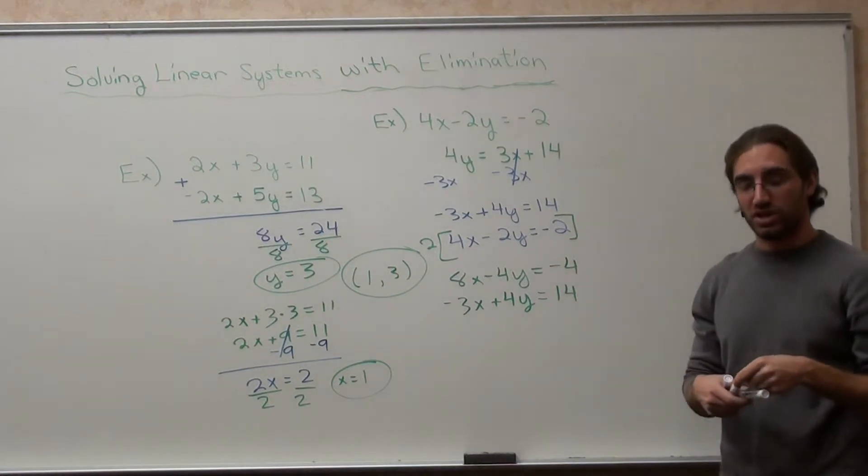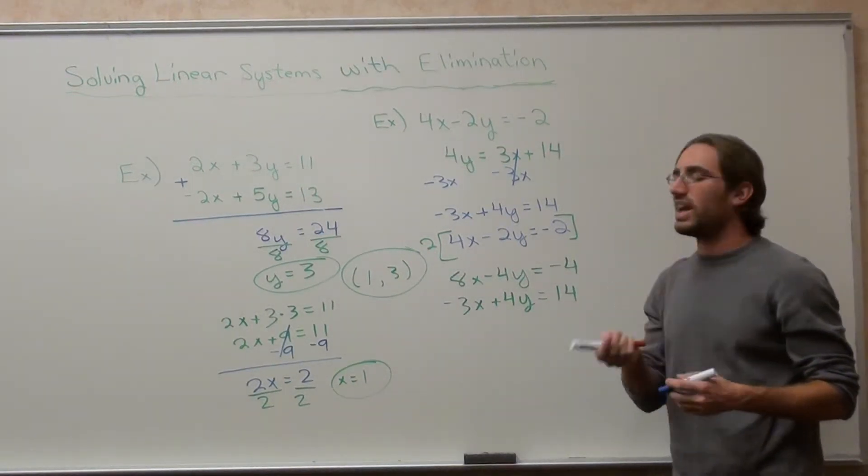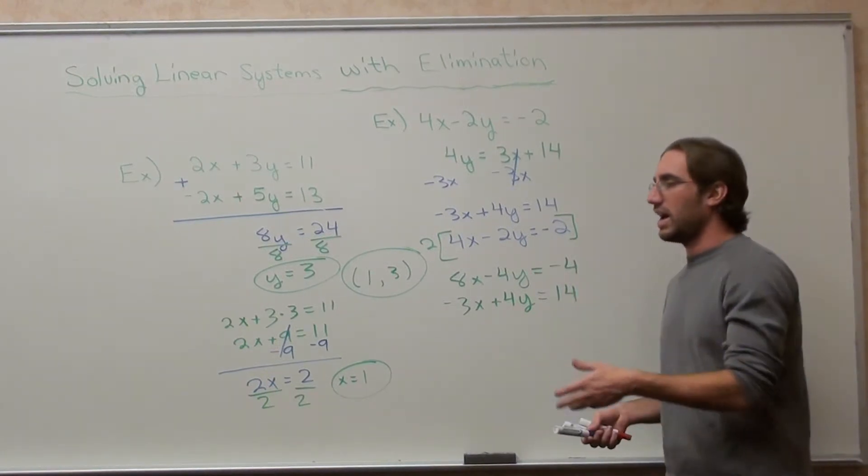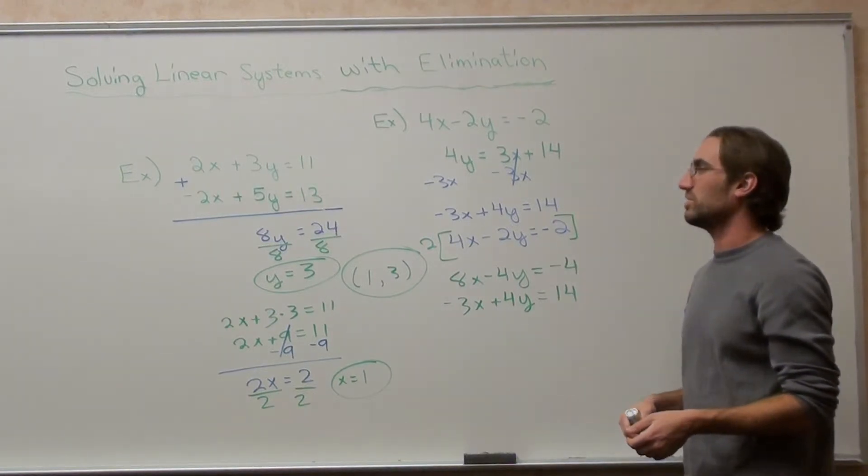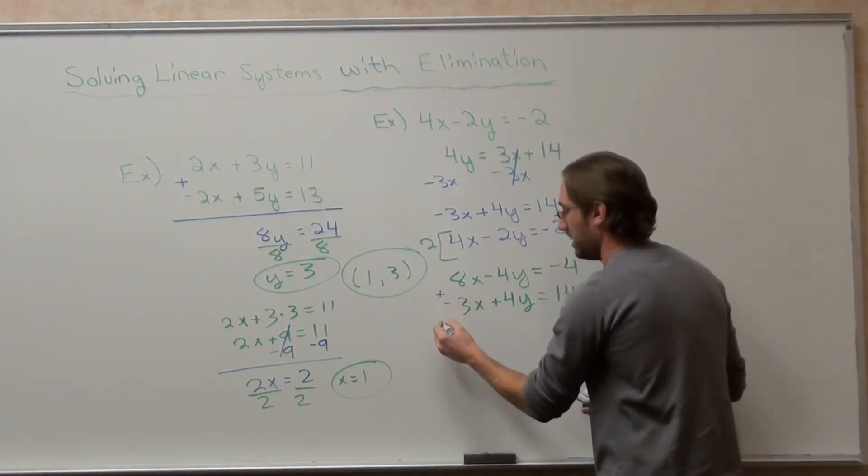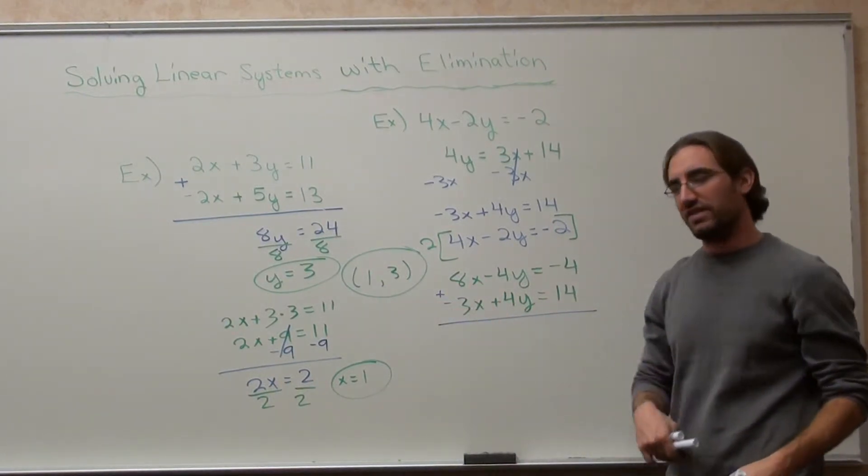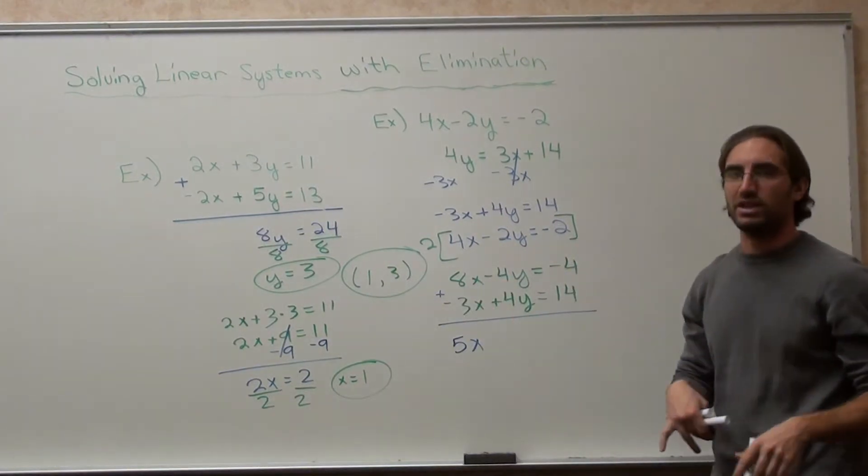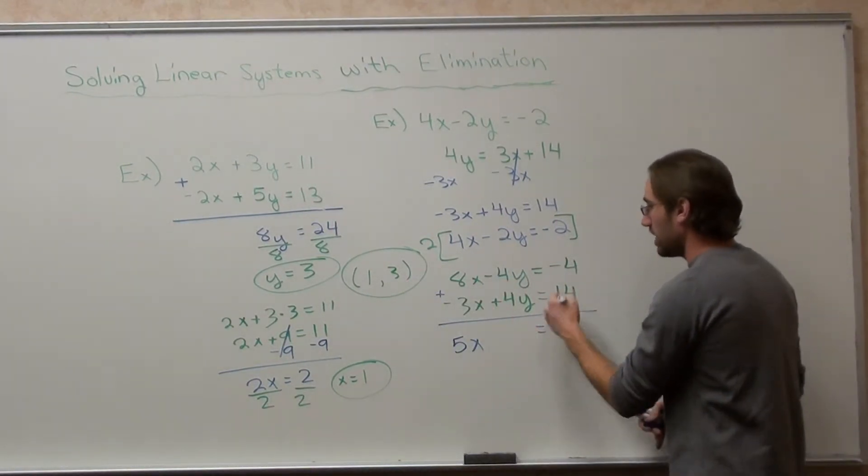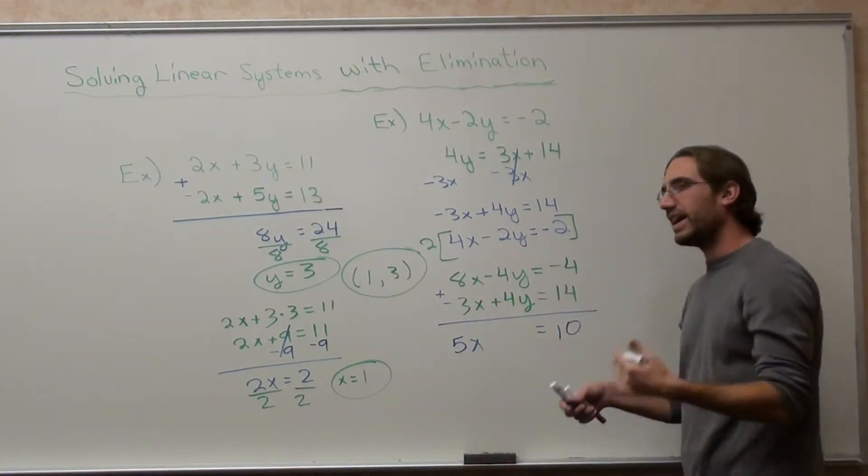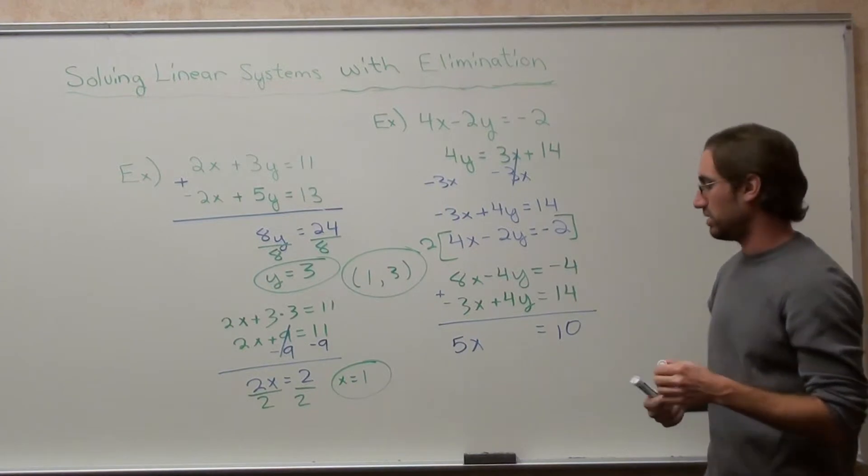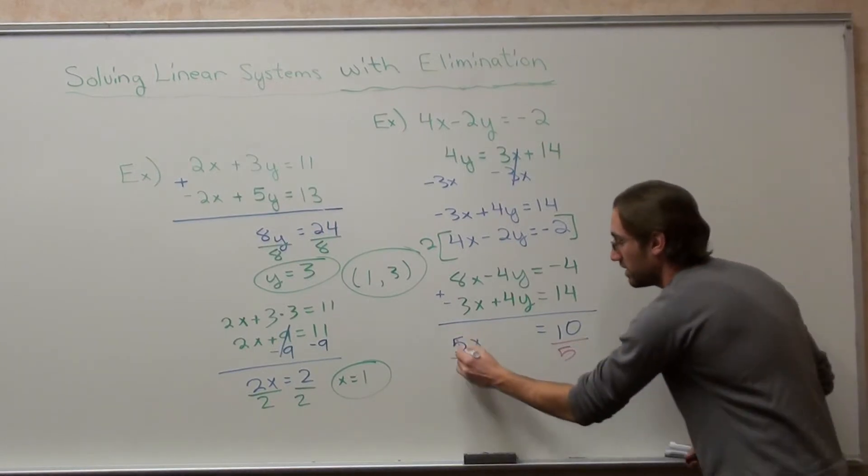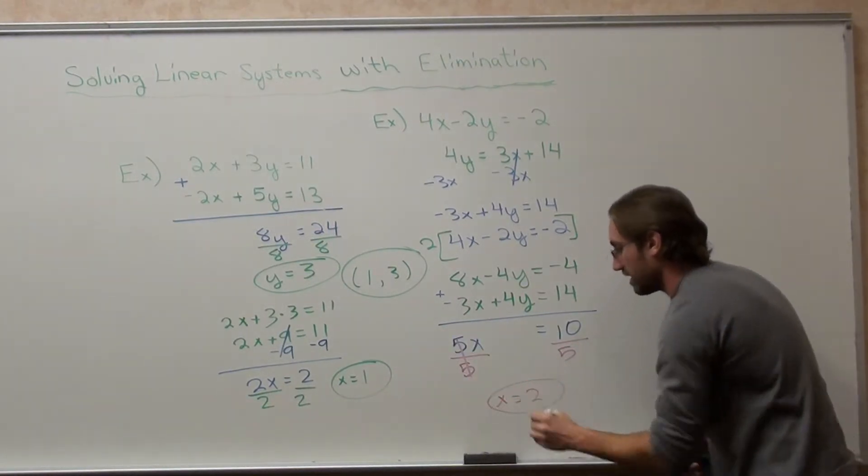And here's where I add the two equations together. Now some of you might be arguing, well, isn't there any, yeah, there's always an easier way to do it, but this is an elimination problem, so we're going to do it how we do it on this one. I would probably, I might, no, I wouldn't use substitution. That would be brutal here. I'm going to add 8x plus negative 3x is 5x. Negative 4y plus 4y cancels. It's 0y, which is 0, equals negative 4 plus 14, which is 10. Finally, we got to something that's kind of close to the answer. 5 times x equals 10, so divide by 5 on both sides. x equals 2.